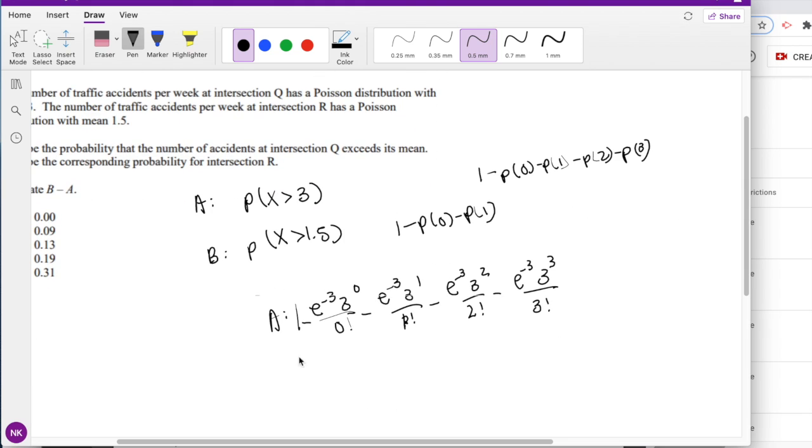When I'm plugging into the calculator, to save time I would factor out the e to the negative 3. So 3 to the 0 is just 1, minus 1 plus 3, minus 9 over 2 factorial which is 2, minus 9 over 3 factorial which is 6.